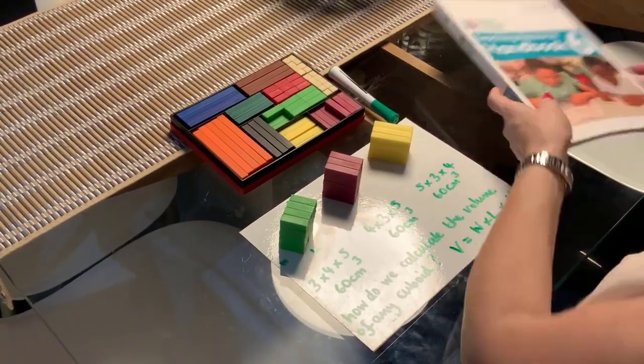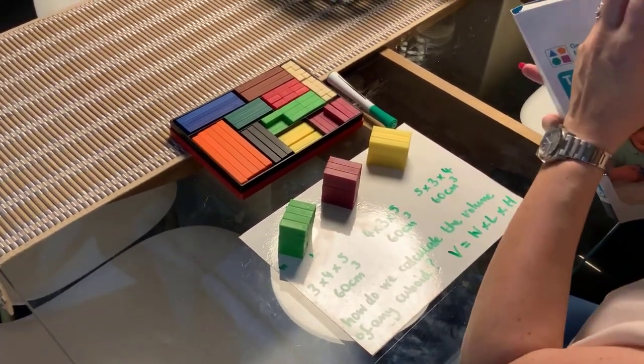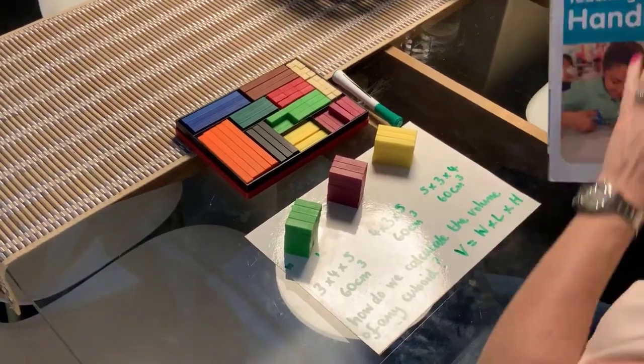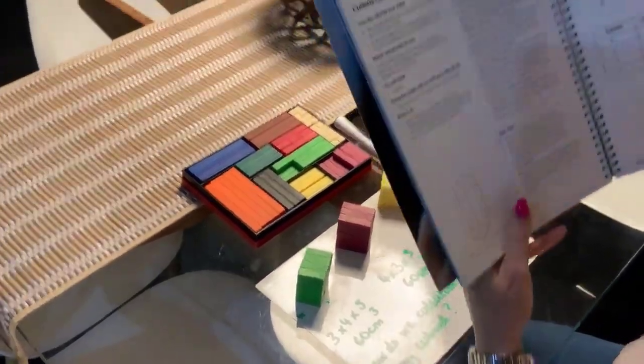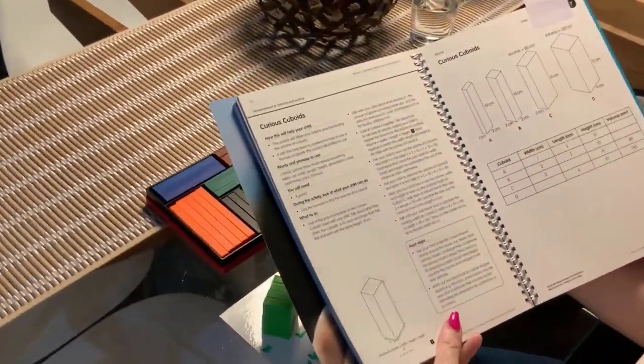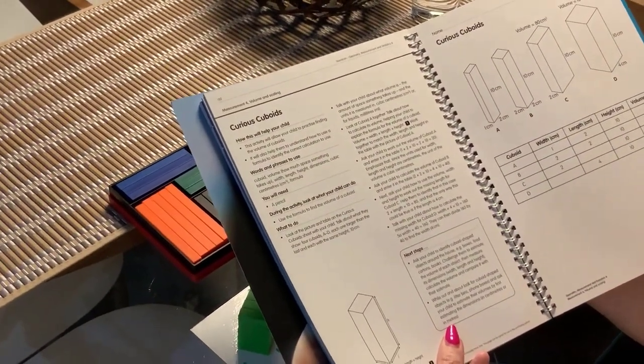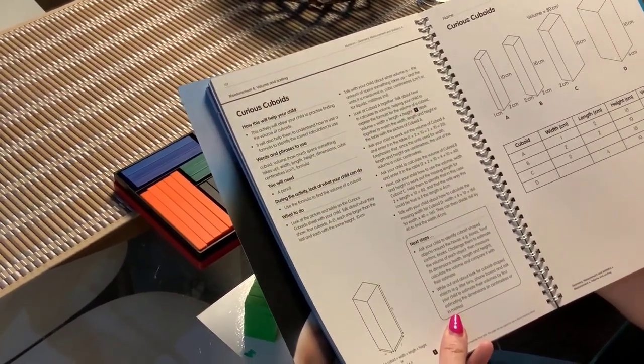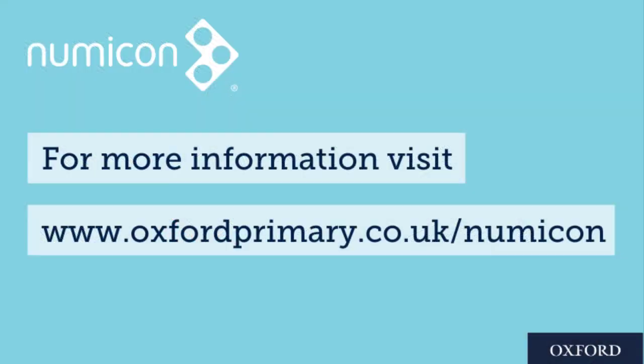Once we've explored that, looked at different cuboids, we can then think about the Explore More Copy Master, which is curious cuboids, where children are exploring the volume of different cuboids.